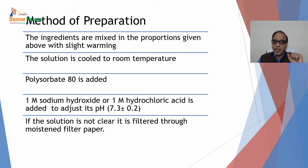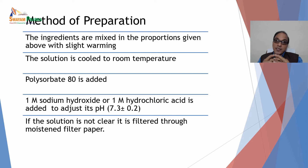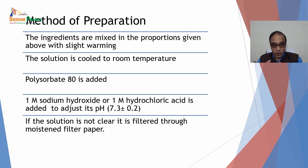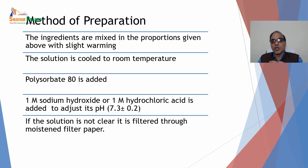To prepare soybean casein digest medium: the ingredients are mixed in the proportions given in the composition table and slightly heated. The solution is cooled to room temperature and polysorbate 80 is added if this ingredient is to be included. Then 1M sodium hydroxide or 1M hydrochloric acid is added to adjust pH to 7.3 ± 0.2. If the solution is not clear, it is filtered through a moistened filter paper.